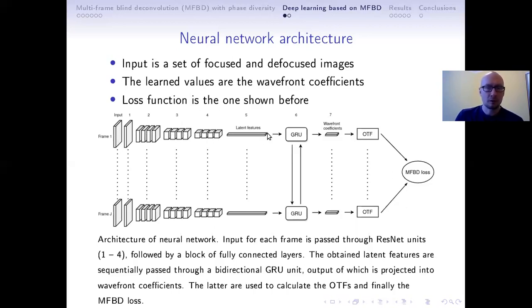And eventually we learn certain latent features which are then passed through bidirectional gated recurrent unit, which is a simpler version of long short term memory. This is useful because we assume that the consecutive atmospheric frames are correlated with each other. So that's where the idea of using that unit comes from. And now for each time step, the output consists of 44 dimensional set of wave front coefficients.